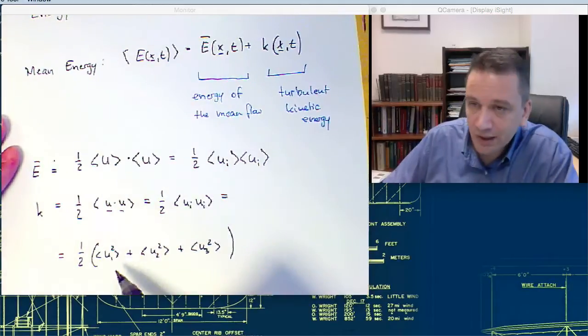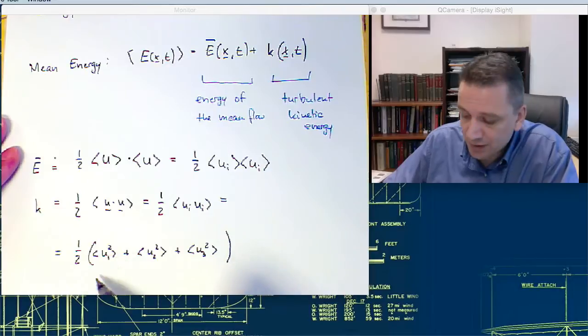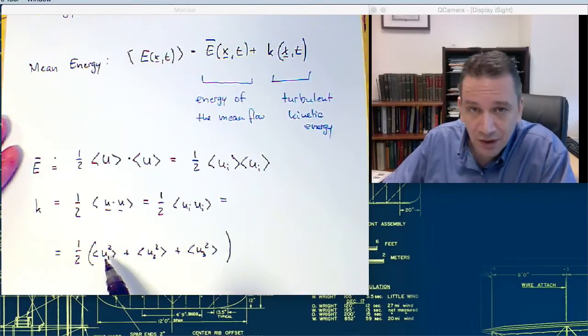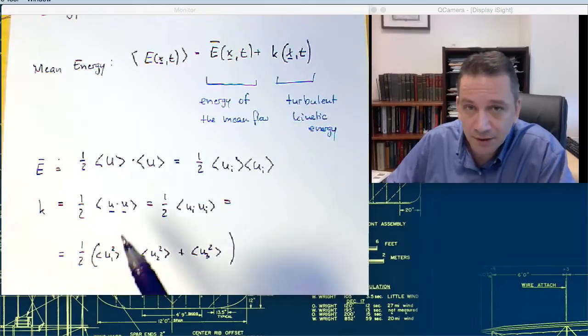So you see these are the lower case u, so these are only the fluctuating part. You square it and then you take the mean value of it. And if you add them all up in the x, y, and z directions, so in all three directions, then you can obtain the turbulent kinetic energy.